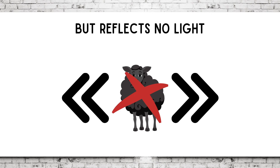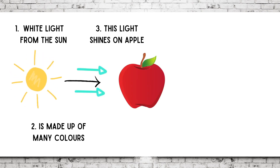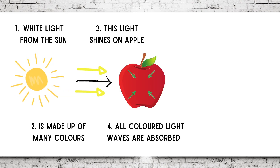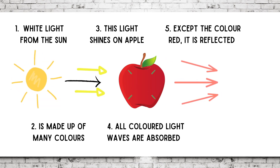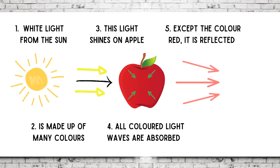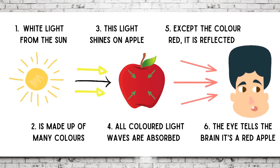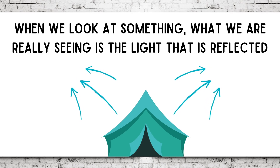Let's recap. White light from the sun is made up of many colors. This light shines on an apple. All colored light waves are absorbed, except the color red, which is reflected. The eye sees this light wave and sends a message to the brain. In conclusion, when we look at something, what we are really seeing is the light that is reflected.